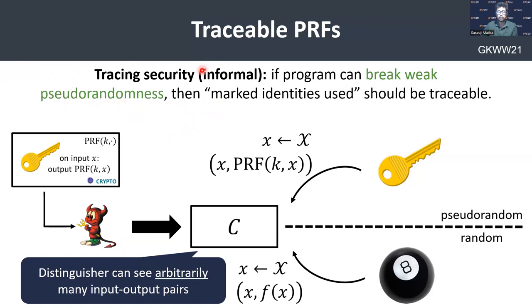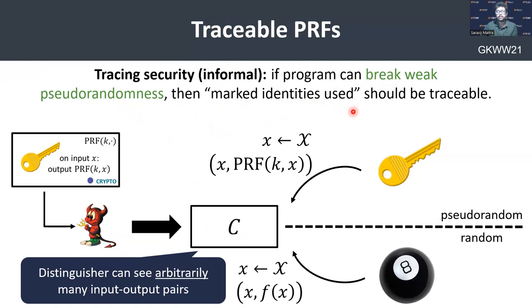The tracing security informally means that if the distinguisher C can break weak pseudorandomness of the underlying traceable PRF, then the marked identities used to construct the PRF should be traceable.